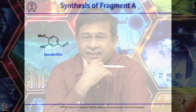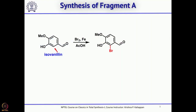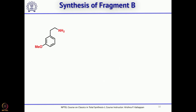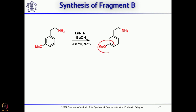How was Fragment A synthesized by Parker? He took isovanillin and brominated at this carbon using bromine and iron, then did a stabilized ylide reaction to get the corresponding thioenol ether — that is Fragment A, which is used for the Mitsunobu reaction. For Fragment B, he started with metamethoxyphenylethylamine and metal-ammonia reduction (Birch reduction), which gave this diene. Hydrolysis of the enol ether gives the ketone and the double bond migrates to give the more substituted conjugated enone.